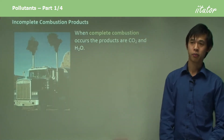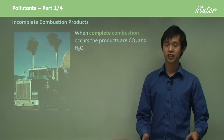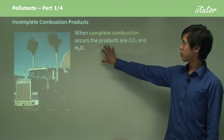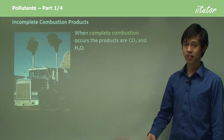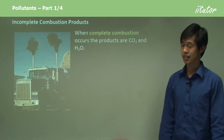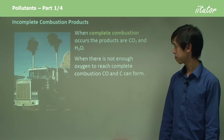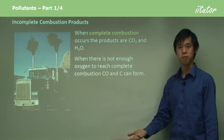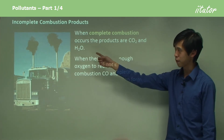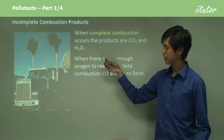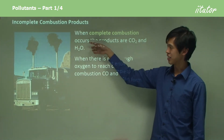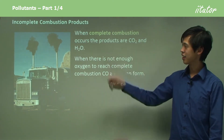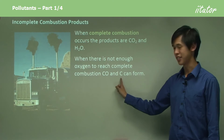Let's talk about incomplete combustion products — we spoke about this briefly in the last lesson but will go into more depth here. With complete combustion, the products are CO2 and H2O. When there's not enough oxygen to reach complete combustion, we get CO and C. A familiar sight is a big truck just starting up — you can see a plume of black smoke come out as the driver hits the accelerator. That black smoke is C, and it's not very good for you to breathe in.